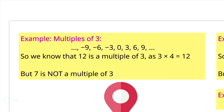Then you can write the sequence: minus infinity, minus 9, minus 6, minus 3, 0, 3, 6, 9, plus infinity. We know that 12 is a multiple of 3 because 3 multiplied by 4 equals 12. But 7 is not a multiple of 3.